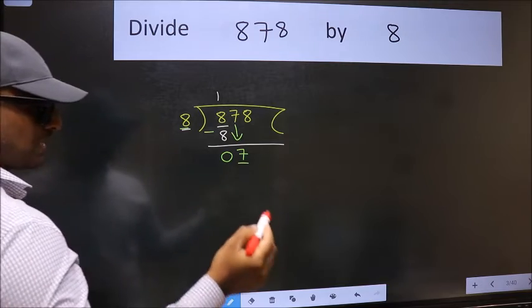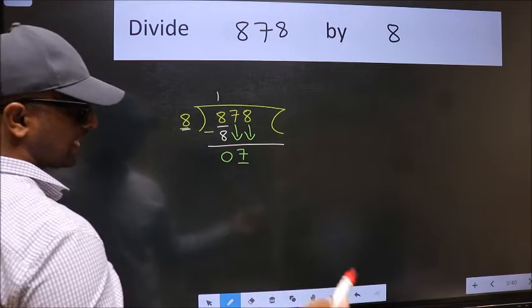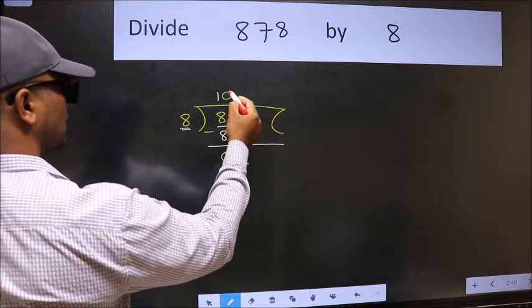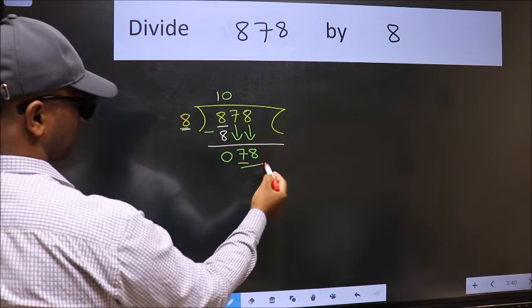So we should bring down the second number. And the rule to bring down the second number is we should put 0 here. Then only we can bring this number down. Now 78.